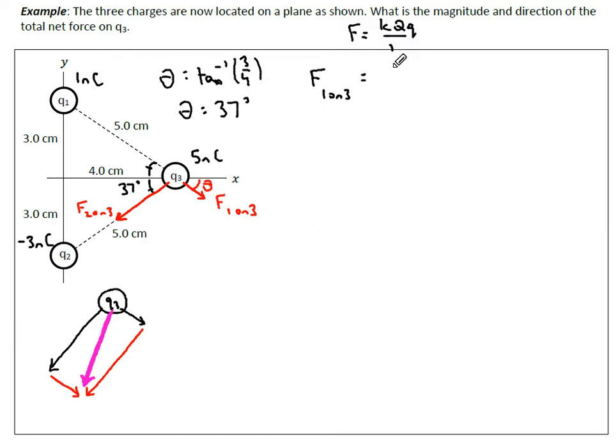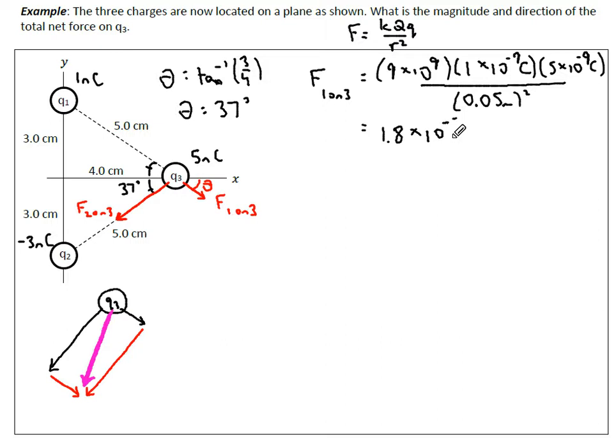We have 9 times 10 to the 9, and the charge is 1 times 10 to the negative 9 Coulombs. The other one is 5 times 10 to the negative 9 Coulombs. They are 5 centimeters apart, that's 0.05 meters squared. Plugged into our calculator we have 1.8 times 10 to the negative 5 Newtons.